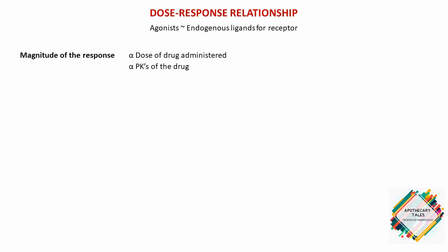The drug concentration at the receptor site is determined by both the dose of the drug administered and by the pharmacokinetic profile of the drug. The pharmacokinetic profile includes the rate of absorption, distribution, metabolism, and elimination. Therefore, the concentration of the drug at the receptor site basically determines the magnitude of the drug effect produced.